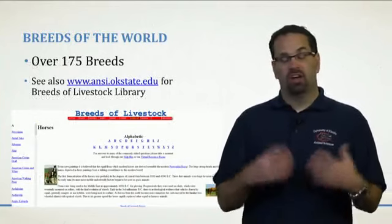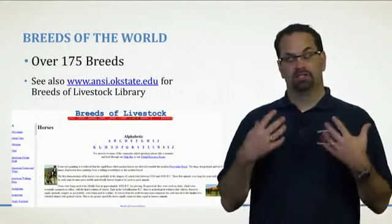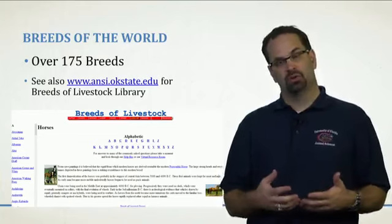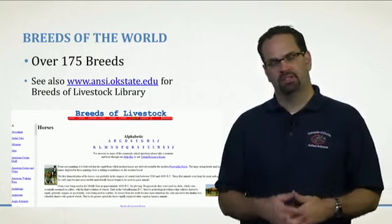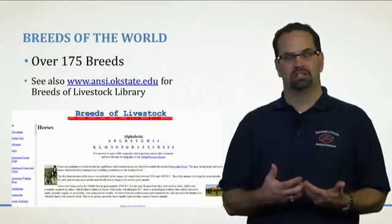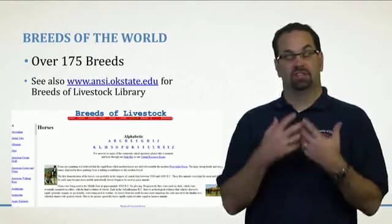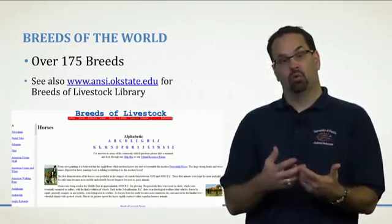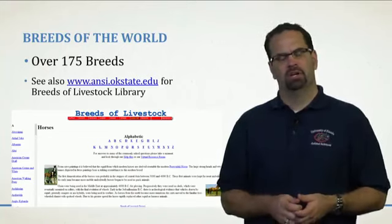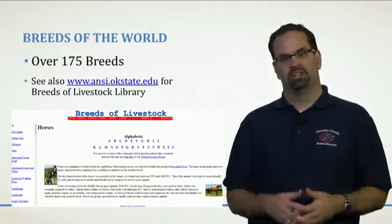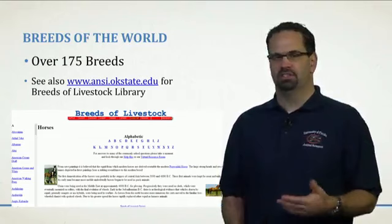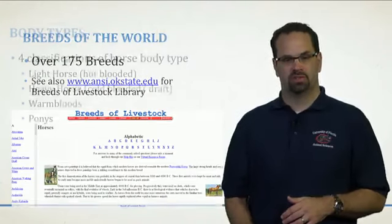In the world, there are over 175 horse breeds — that is a ton. Obviously, we're not going to be able to cover all of them in this lecture or course. But you can go to this website from Oklahoma State University here in the United States, which actually lists over 175 horse breeds and other livestock. You can find some of the donkey breeds we'll talk about in another lecture on this website. It's on the course link.